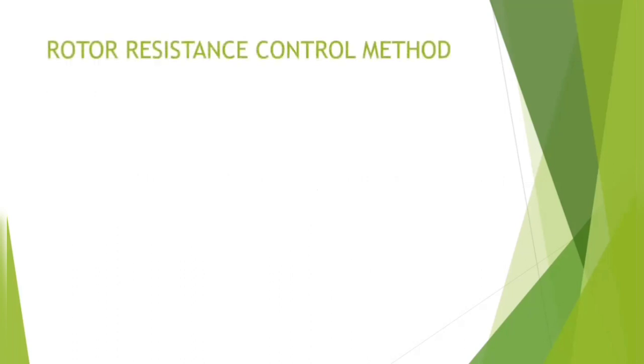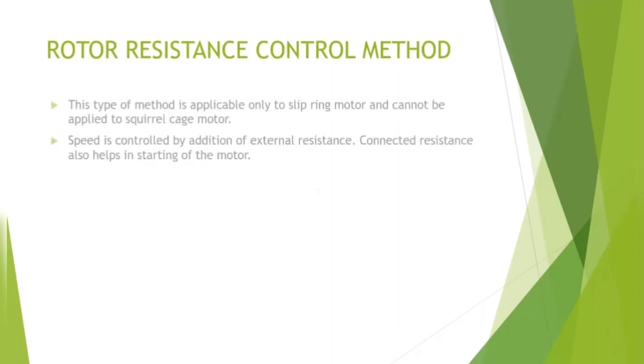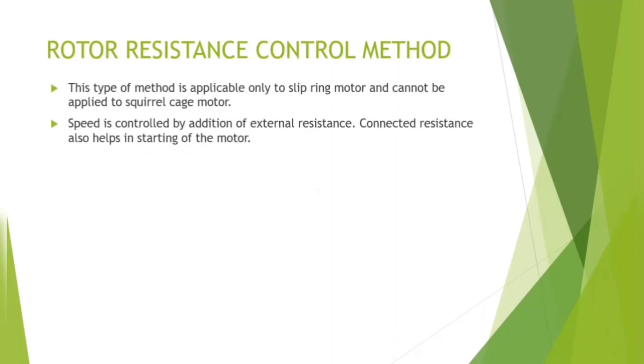Coming to second method, the rotor resistance control method. This type of method is applicable only to slip ring motor and cannot be applied to squirrel cage motor. The speed is controlled by addition of the external resistance, and connected resistance has a dual purpose: it helps in starting of the motor and also speed controlling.